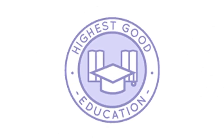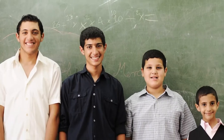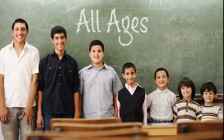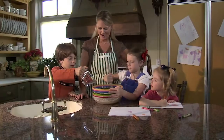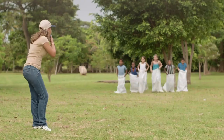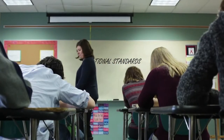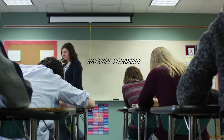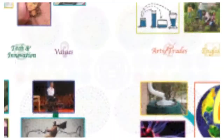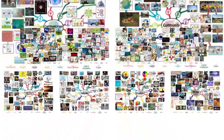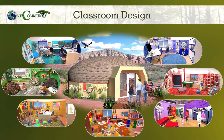The next component is highest good education. This component is complete and pretty much ready to launch once we're on the property. One Community's approach to highest good education is designed for all age groups, adaptable to any schooling environment, inspiring and fun for all participants, and includes national standards, all subjects, lesson plans, teaching strategies, learning strategies and tools, classroom design, and more.